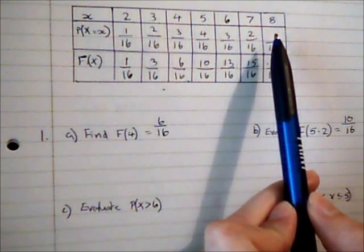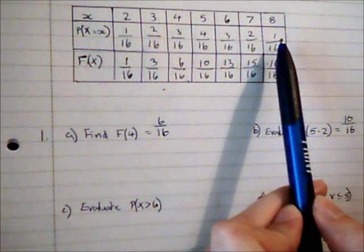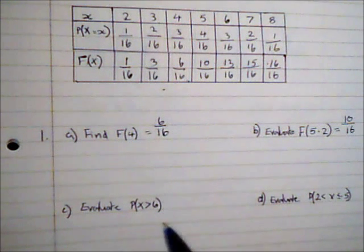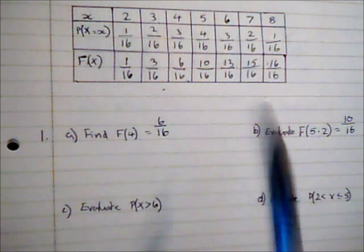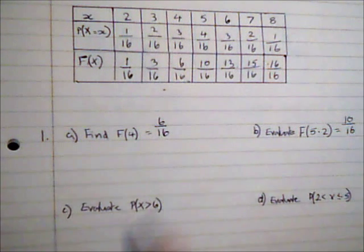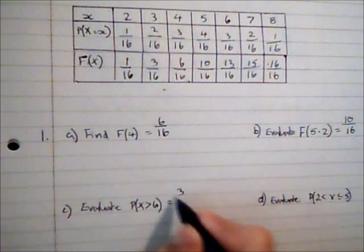Now I can do this by thinking, well what is the probability that x is 6 or lower, so what is F(6)? Well F(6) is 13/16ths. So what's missing from that? Well 3/16ths, so that must be the probability I want here. So that's one way of looking at it.